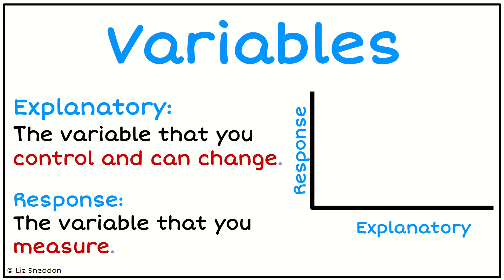So here's our explanatory and response. Our explanatory is looking at the variable we control and we can change, and our response is the one that we measure. So if I was thinking about a plant growing, I could control how much water a plant gets, and then I would measure how tall it grows.